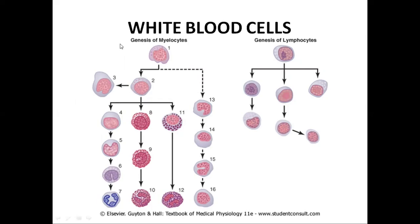All blood cells are formed in the bone marrow from the pluripotent hematopoietic stem cells. These form the myeloblast, which further differentiates into the pro-myelocyte. The pro-myelocyte can give rise to the megakaryocyte, which ultimately converts into platelets.